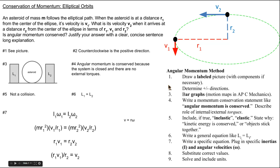We'll start off using our angular momentum method by drawing a labeled picture. Our picture is already there. Determine the positive and negative directions. Let's say counterclockwise is positive.